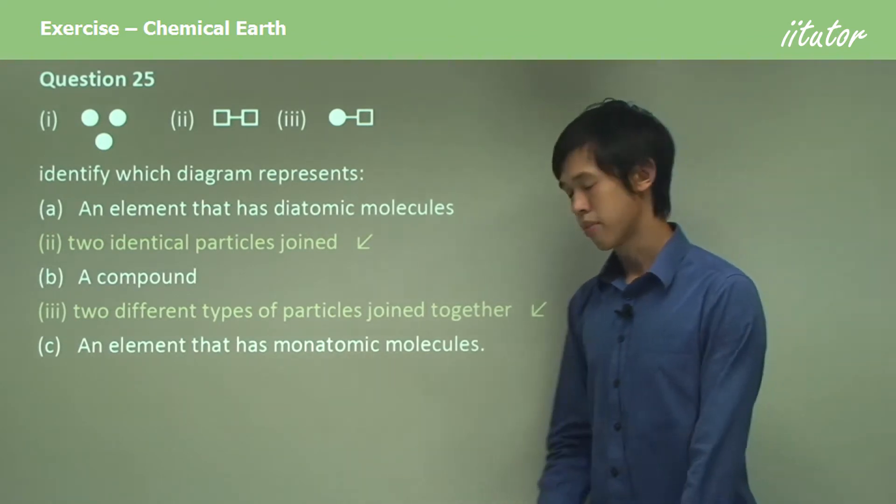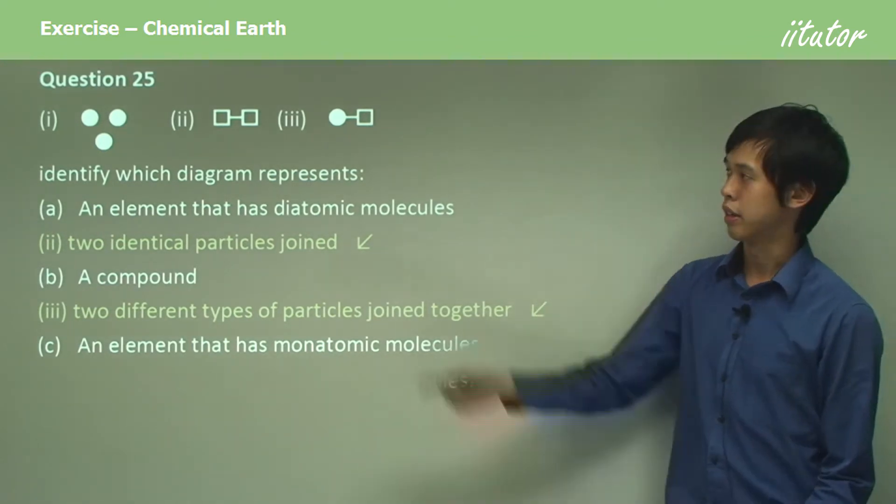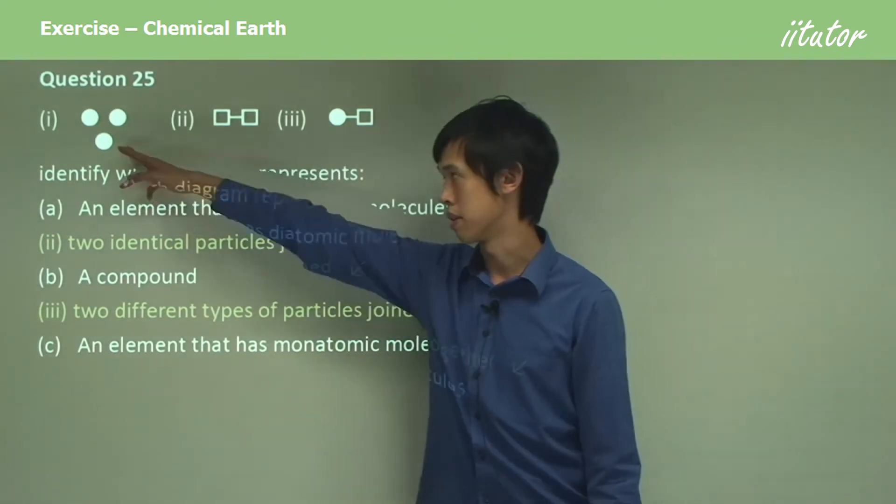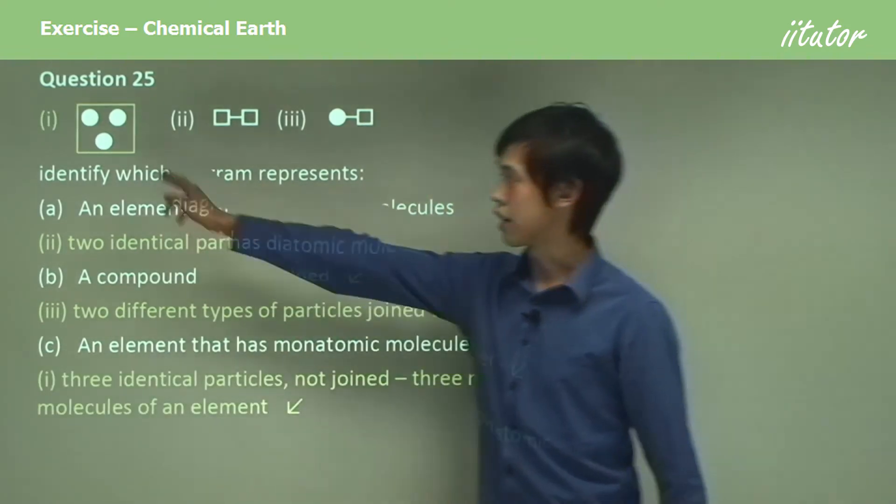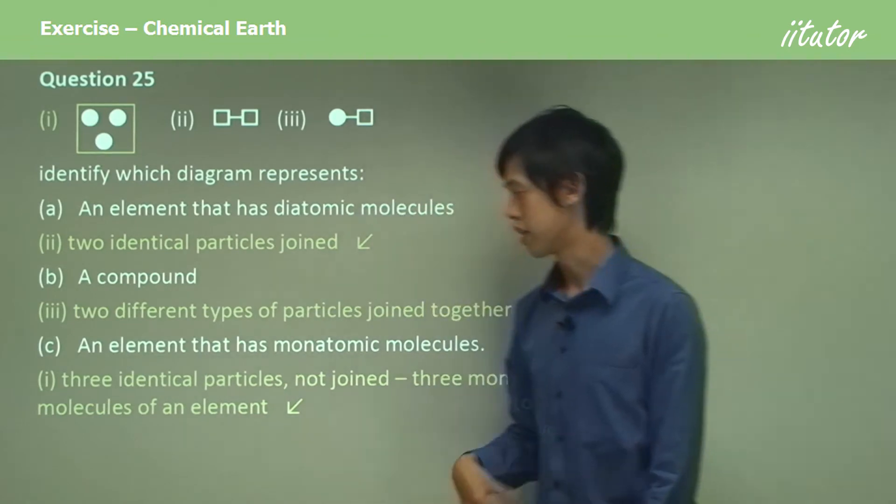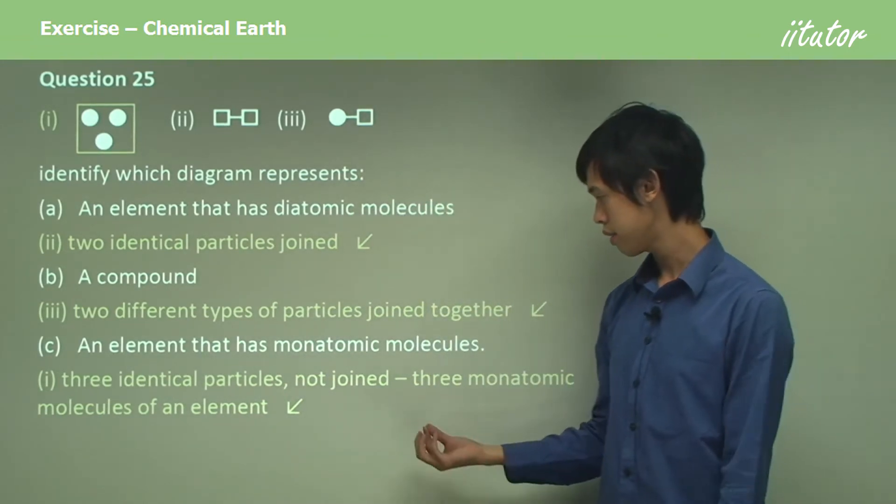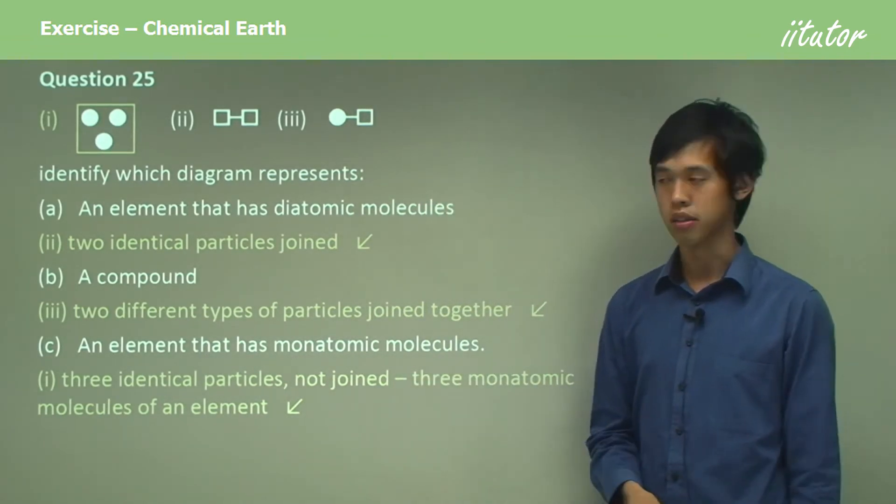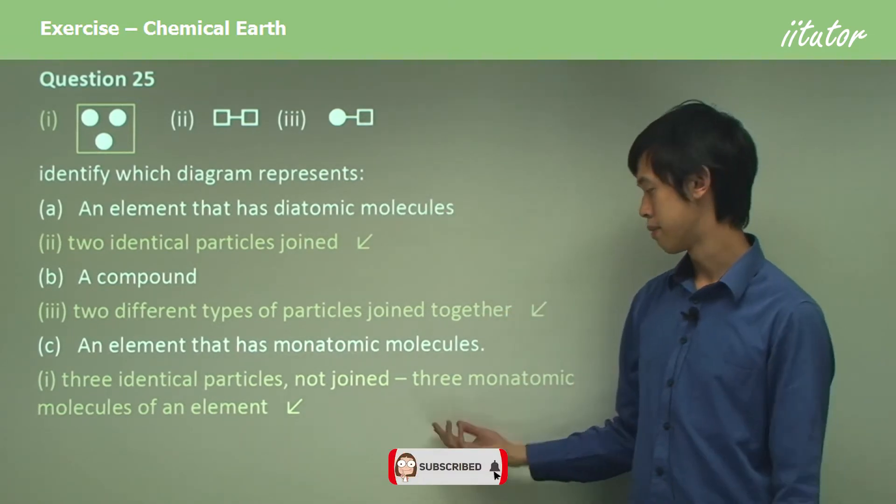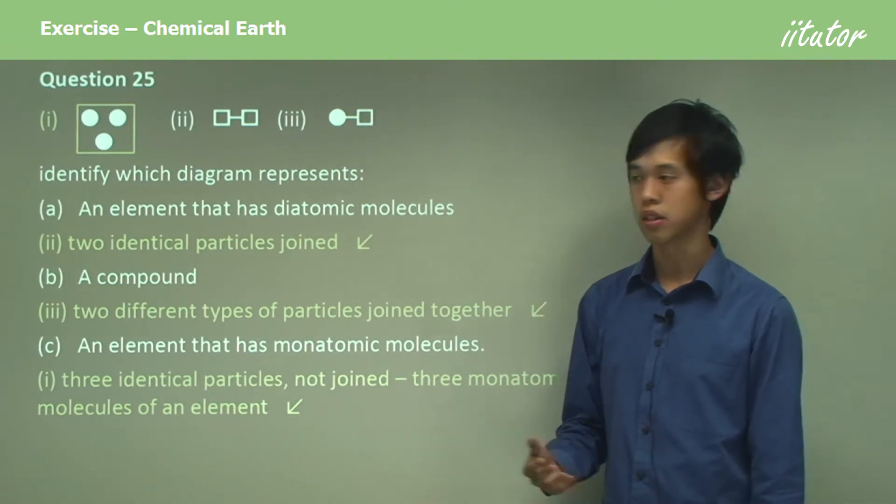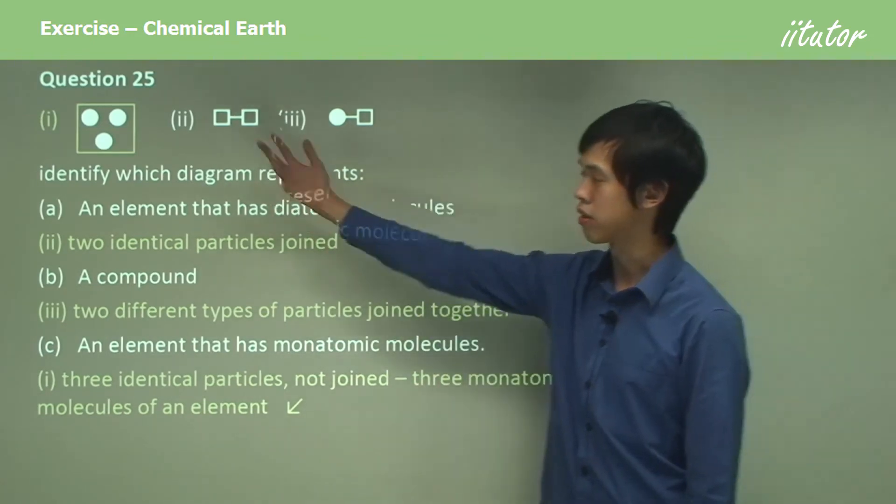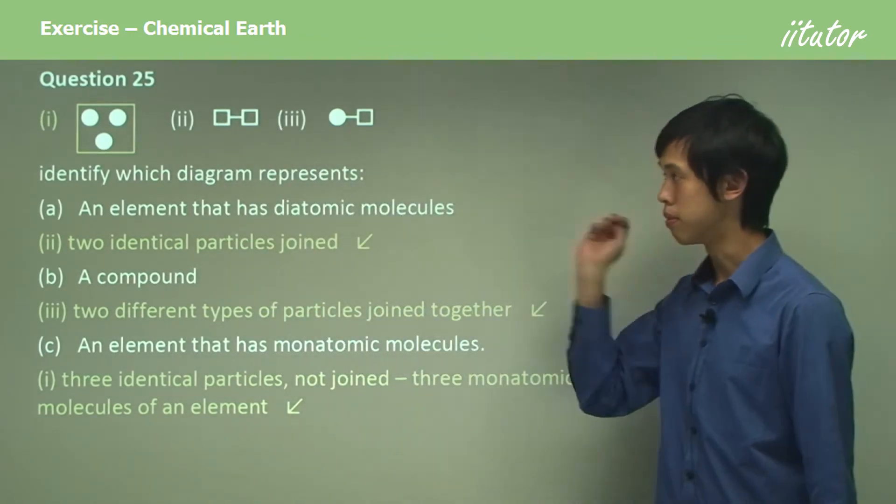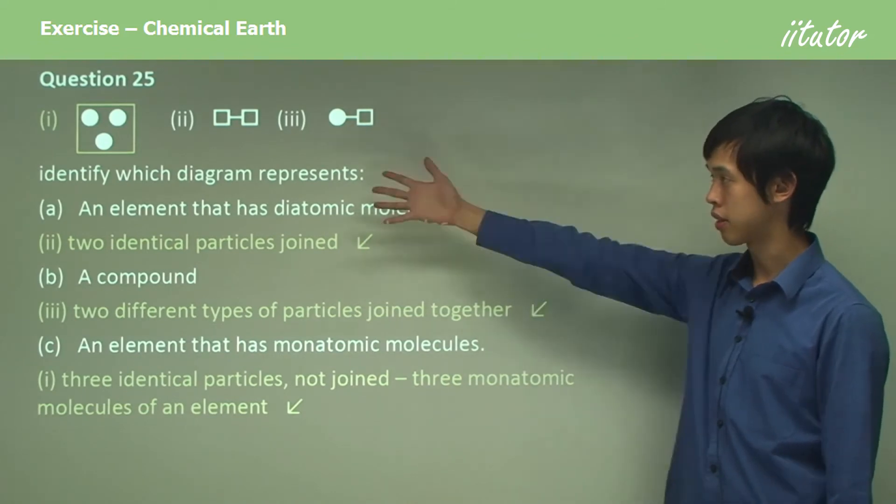And lastly, an element that has monatomic molecules. So if this one and this one have already been used, it must be this one. Three identical particles. You can see that they're three identical things. So it must be an element. But they're not joined together at all. You can see that. There's no joins. So they must be monatomic molecules of that element. Assuming each one represents one atom. So these are monatomic molecules of that element. Okay?